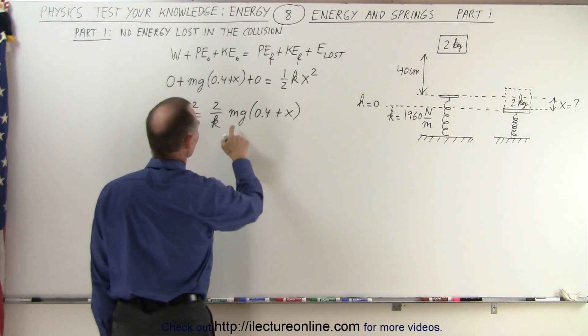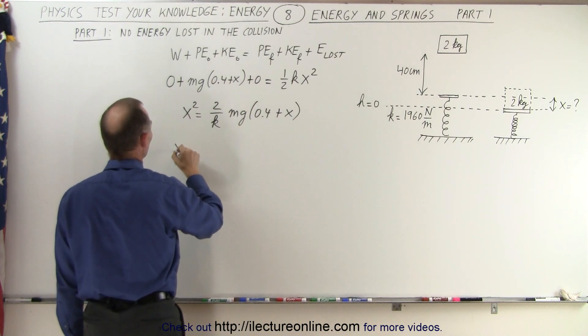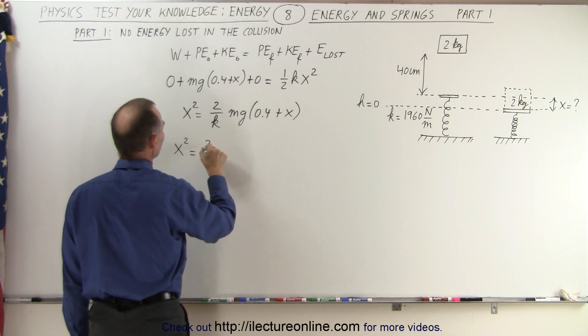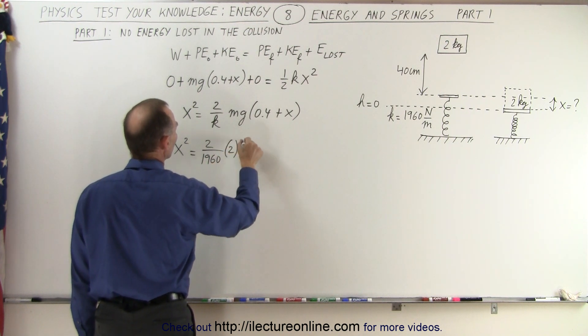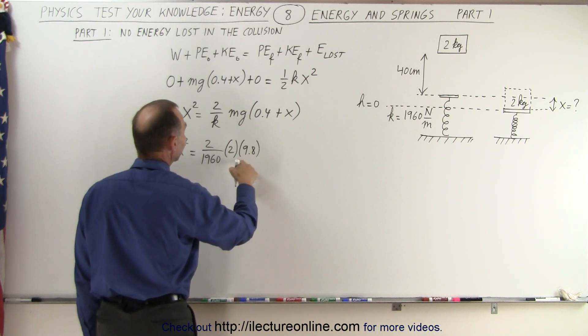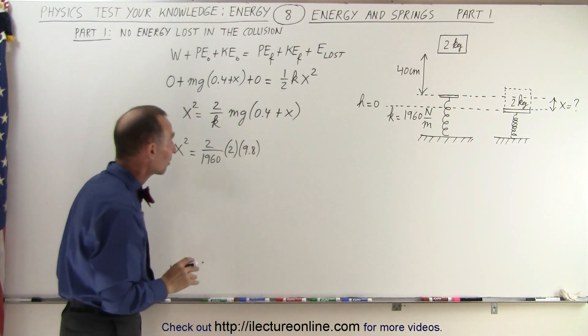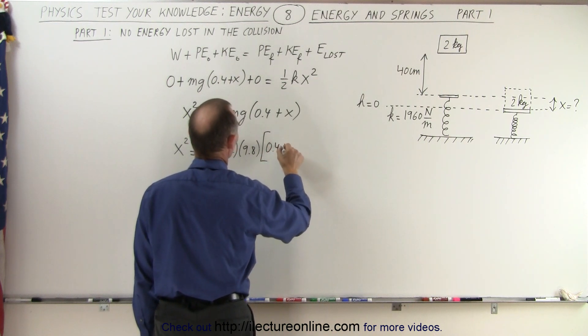Because of that, we need to do the following. First of all, we have an m and a g, and we have k, so let's plug everything in. So I have x squared is equal to 2 divided by 1960 times 2 times 9.8. So 2 times 9.8 is 19.6, so there's going to be some cancellation there, times 0.4 plus x.